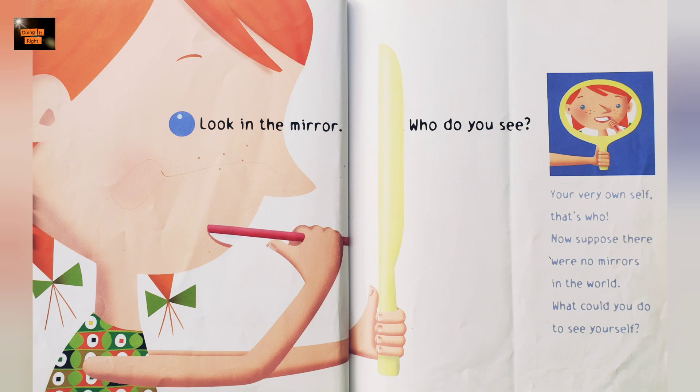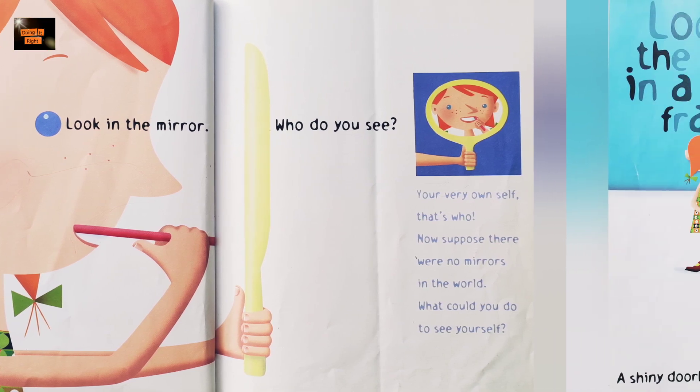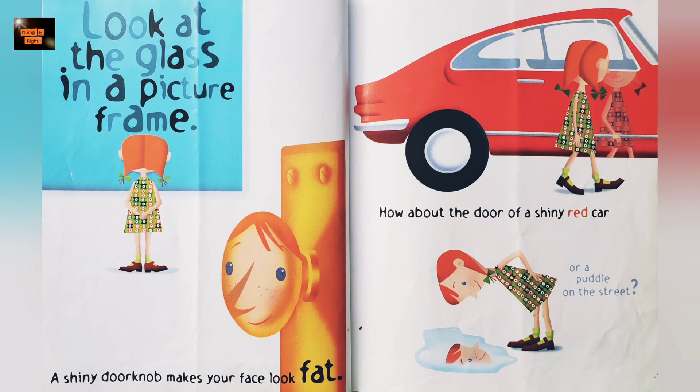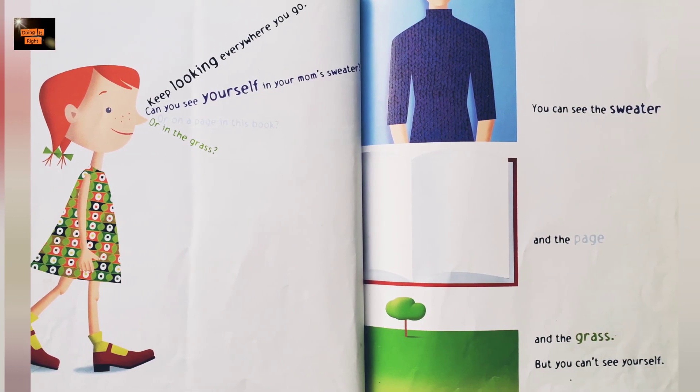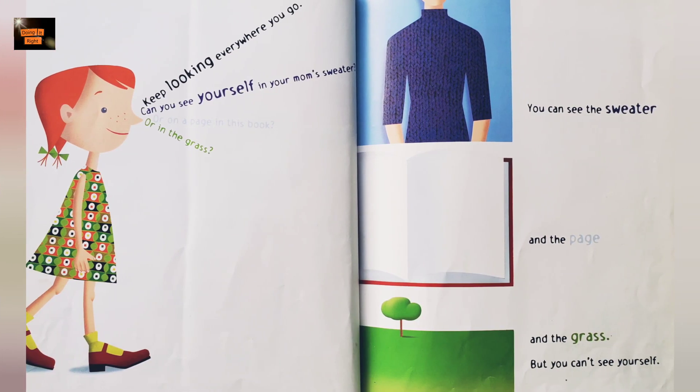Now suppose there were no mirrors in the world. What do you do to see yourself? Look at the glass in a picture frame. A shiny doorknob makes your face look flat. How about the door of a shiny red car or the puddle in the street? Keep looking everywhere you go.